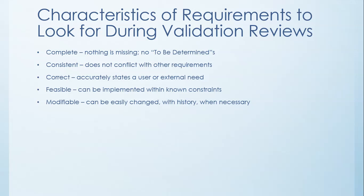A requirement has to be modifiable — it can be easily changed with history when necessary. You're going to have a change management system where a whole bunch of people are changing a document. You have to have rules as to who can change it and when, not to impede progress but to bring structure to it. You want to allow each requirement to be modified and capture things like who modified it, when did they modify it, and why.